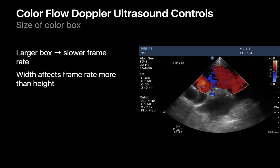The size of the color box determines how much of the 2D grayscale image you want to overlay with color Doppler information. The larger the box, the slower your color flow Doppler frame rate will be. You can usually adjust the box size in both width and depth, and increasing the width tends to come at a greater frame rate penalty than an equivalent increase in depth.